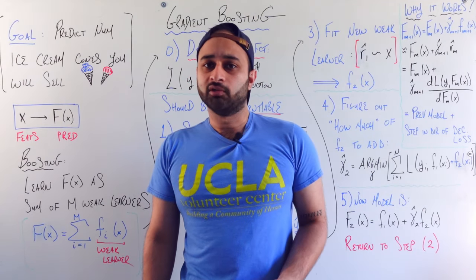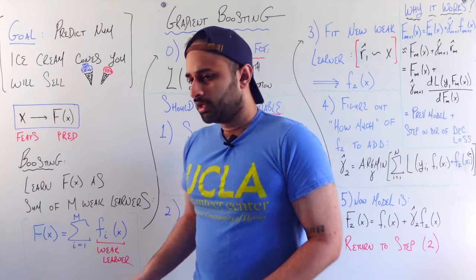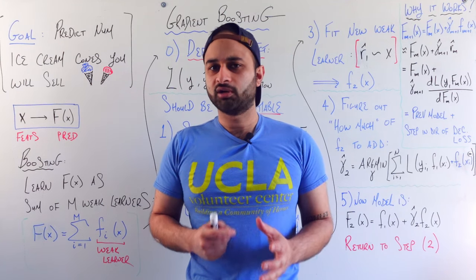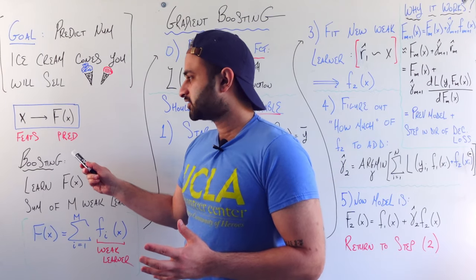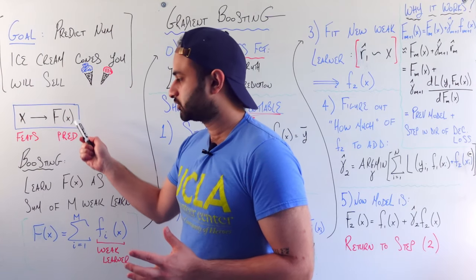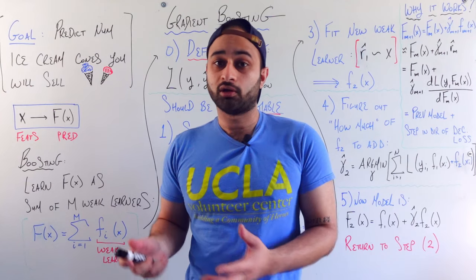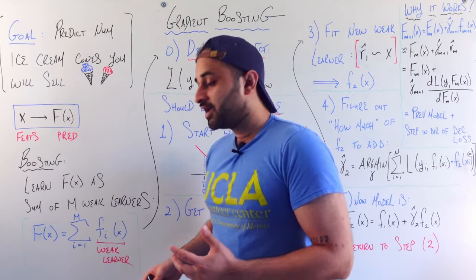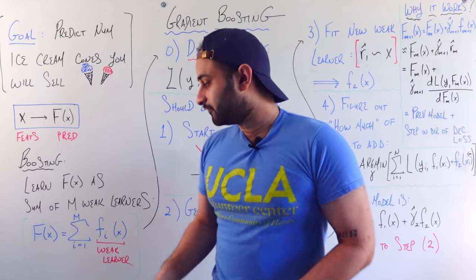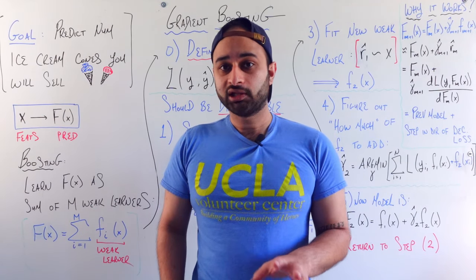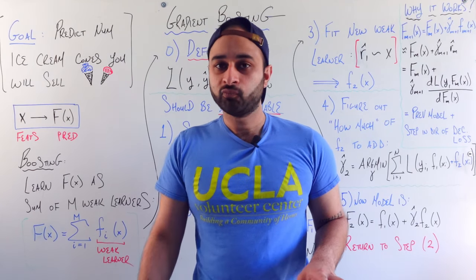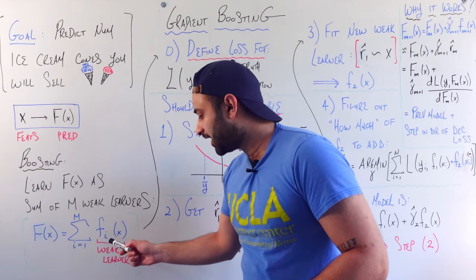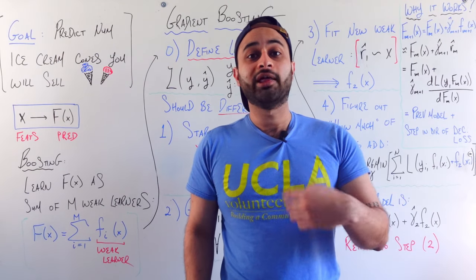Now let's talk about the first word in gradient boosting, which is boosting. If you haven't learned about boosting before, it can be somewhat of an interesting, weird concept, so let me try to break it down. Boosting says that when we learn this f of x — our final prediction function — we're going to learn f of x as the sum of m weak learners. Mathematically, whatever function we learn at the end of the day is going to be expressed as the sum from i equals one to m of these fi of x's, each of which is what we call a weak learner.